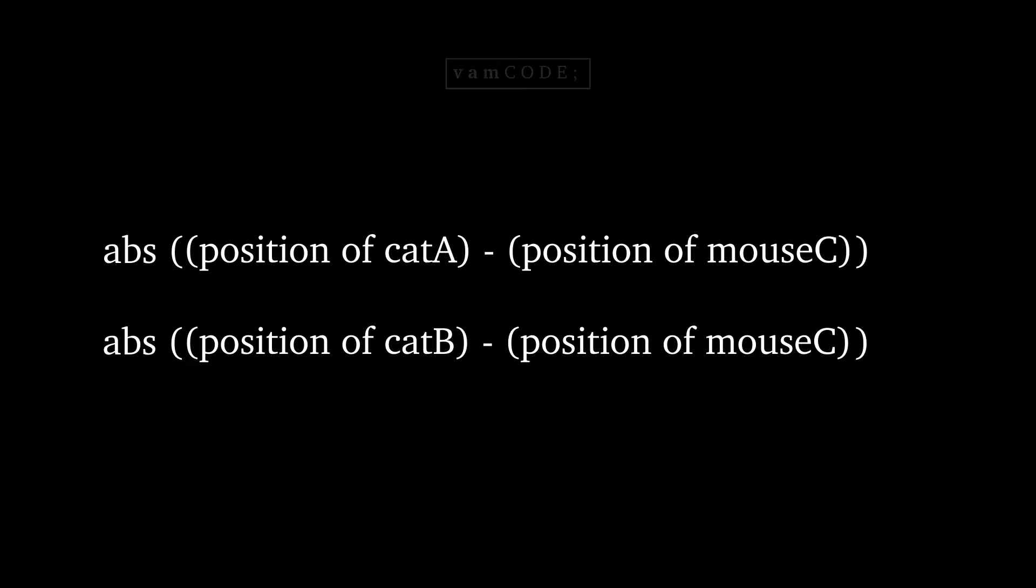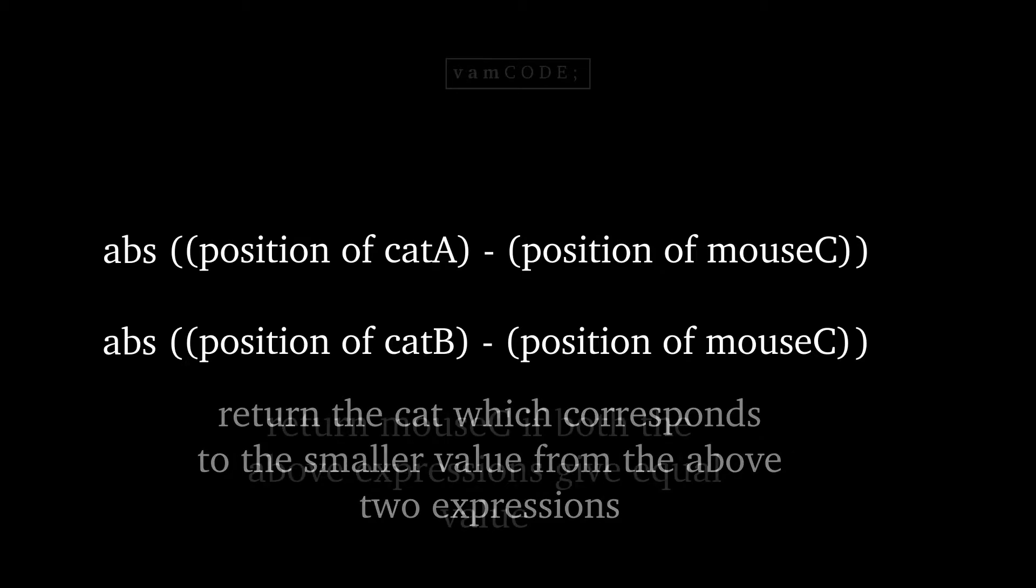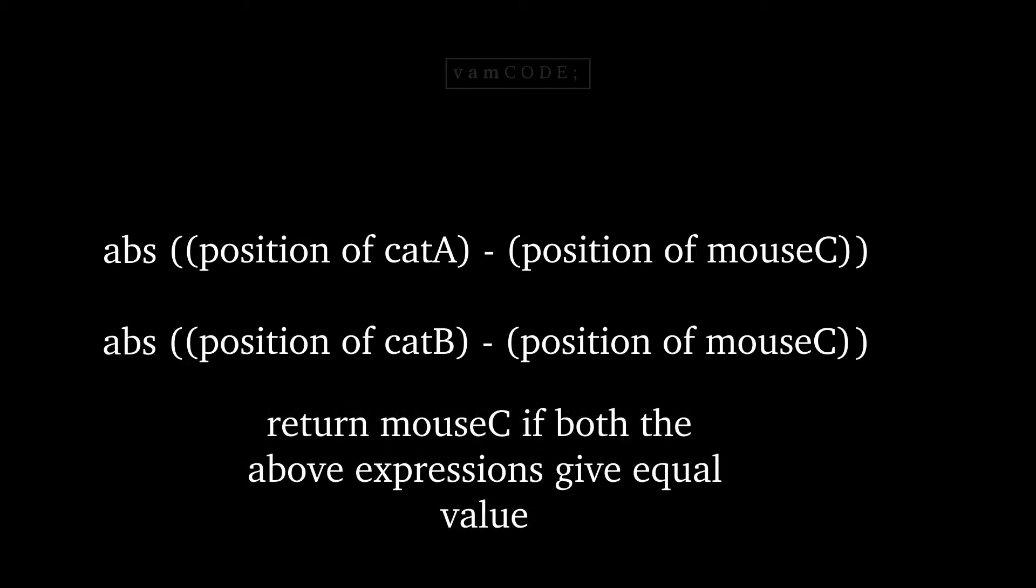After subtraction, whichever cat gives the smaller value will be returned. And finally, if after subtracting, both the answers are equal, then it means that the mouse survives, so we return mouse C instead.